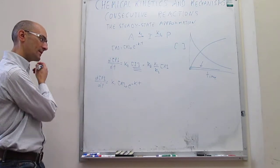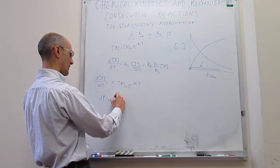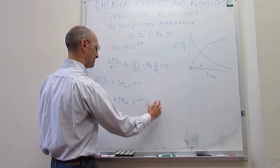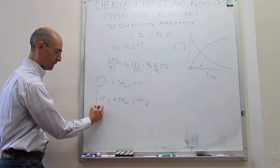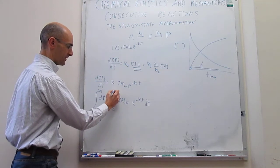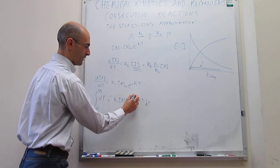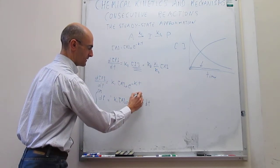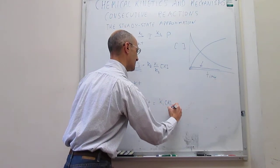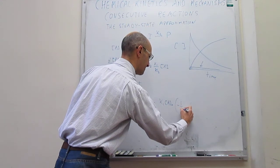To solve this, we first separate variables: d[P] = K1·A0·e^(-K1·t) dt. Integrating from the start of the reaction where [P] = 0 to any time t, and integrating time from zero to t. K1 and A0 are constants and factor out of the integral, so we only need to integrate the exponential term from 0 to t. The integral of e^(-K1·t) equals minus 1/K1 times the same exponential, evaluated from t=0 to t=T.